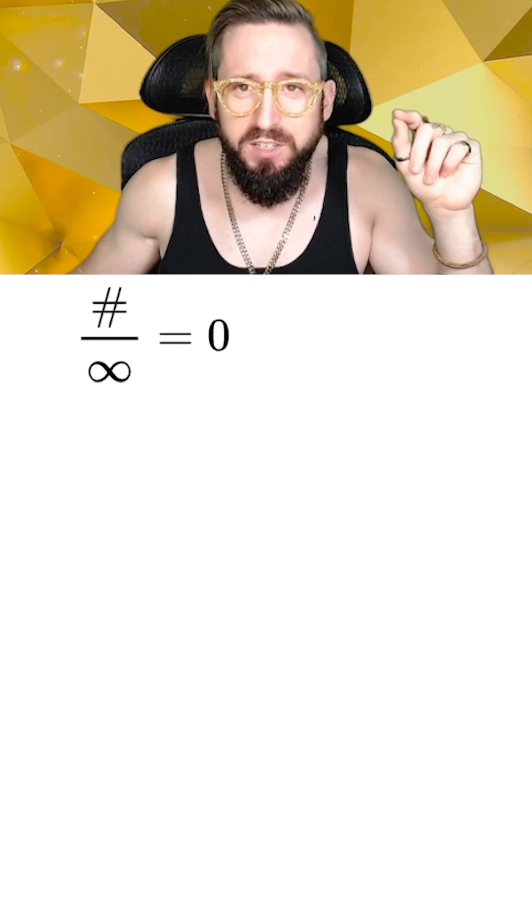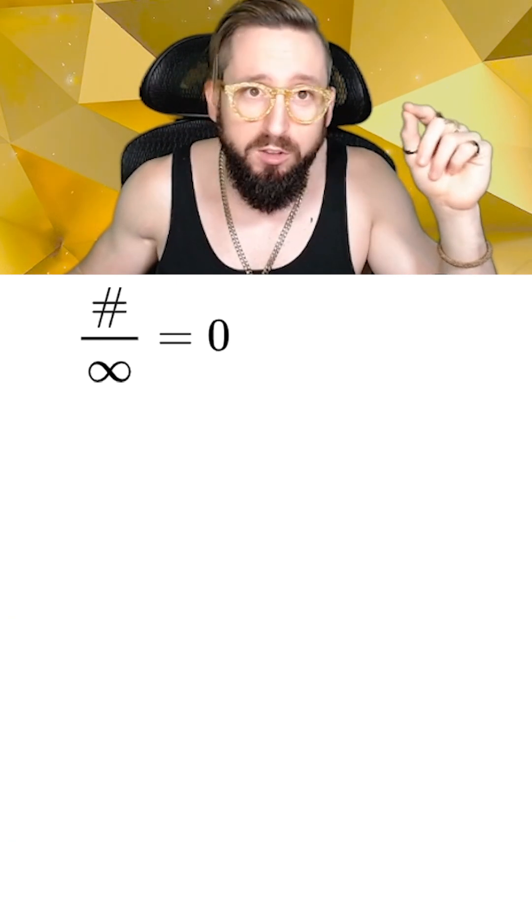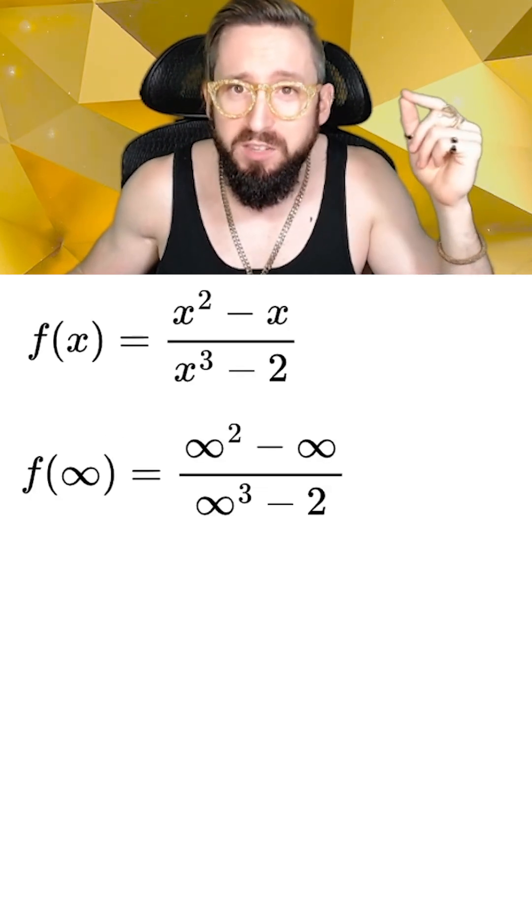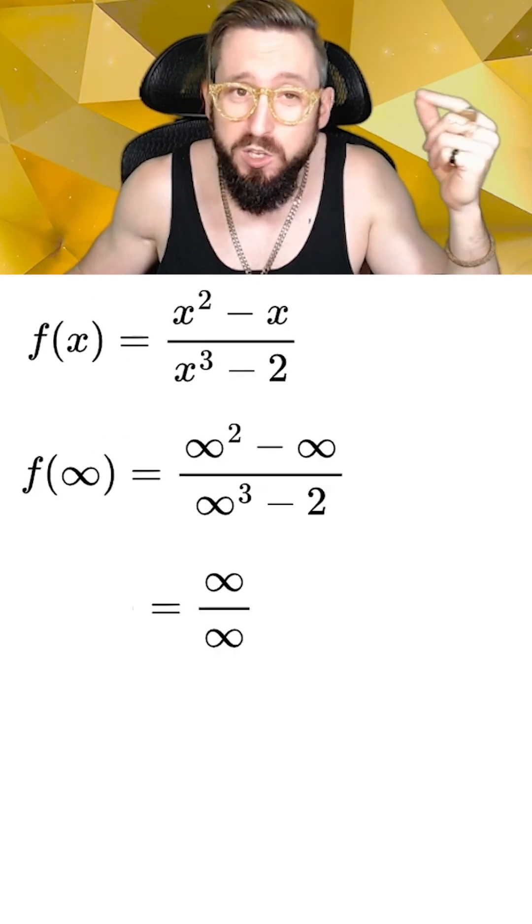The one important exception is that dividing a number by infinity will always be zero, as long as it's not infinity divided by infinity, which is undefined. In this case, our limit simplifies to infinity divided by infinity, which is undefined.